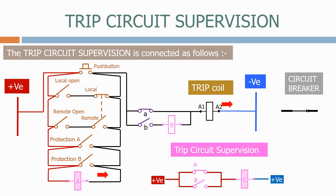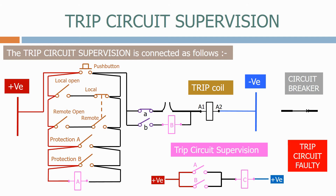If the supply drops off or we have a break in the wiring, the A-coil will drop off, de-energising the C-coil and initiating a trip circuit faulty alarm.